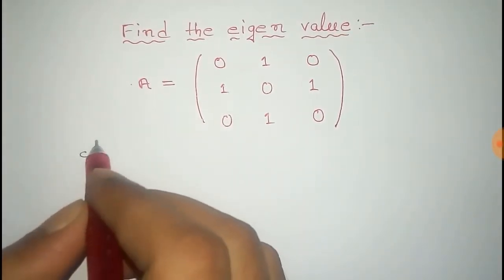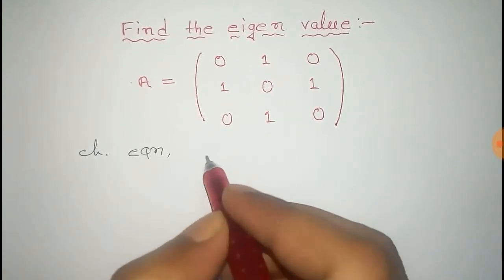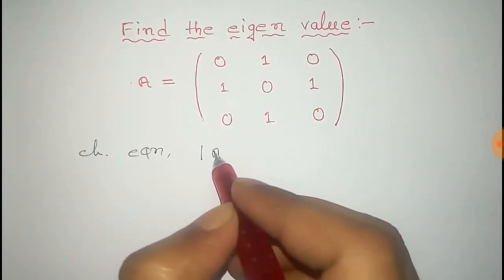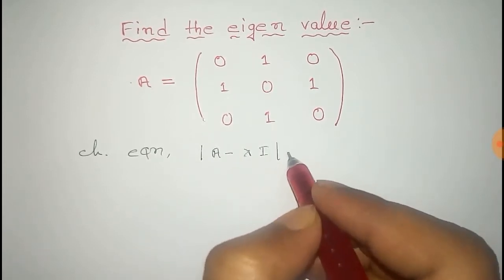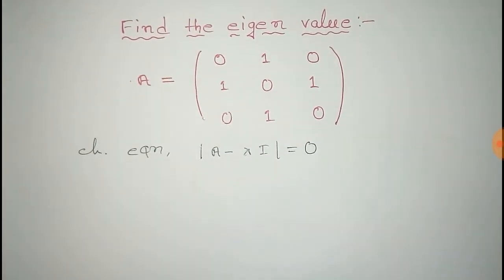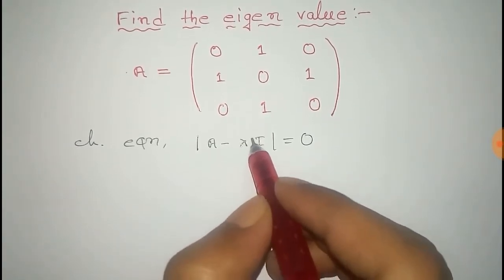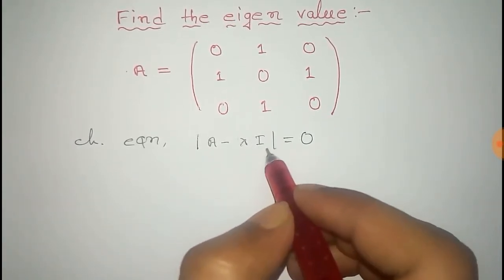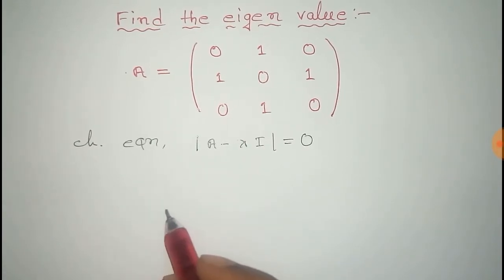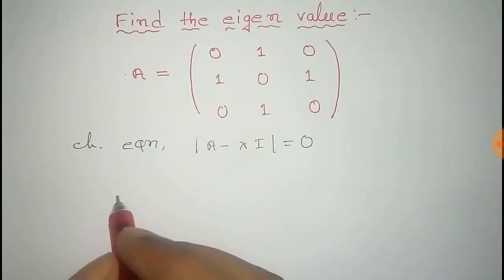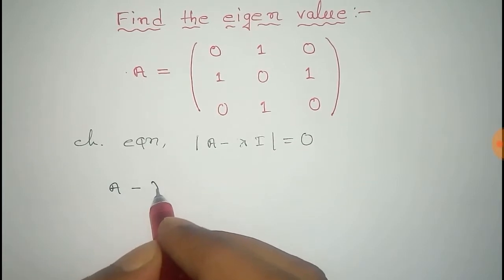Now, from the characteristic equation, we get that the determinant of A minus lambda I equals to 0. Here, lambda is the eigenvalue, and I is the identity matrix. So for this, first of all, we have to find A minus lambda I, this matrix.